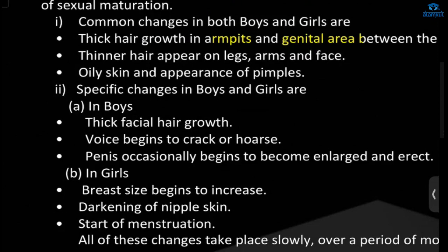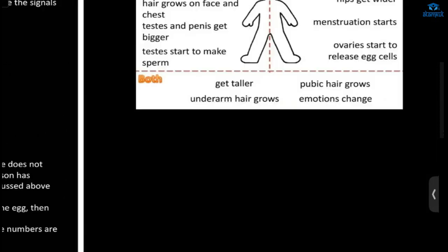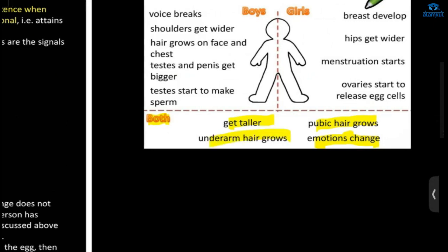The common changes include hair growth in armpits and the genital area, and thinner hair will appear on the lips, arms, and face. There is also oily skin and appearance of pimples, emotional changes for both boys and girls, and growth in body hair including underarm hair.